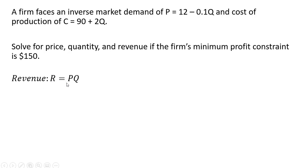Revenue is price times quantity. I'm going to replace the P here with 12 - 0.1Q, and that's all being multiplied by Q. Distributing the Q, we get the firm's revenue.